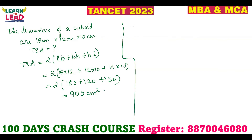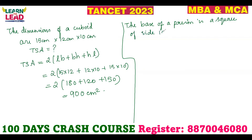Next question: the base of a prism is a square of side 10 centimeters — so it is a square prism. Find the total surface area of the prism if its height is equal to 12 centimeters.